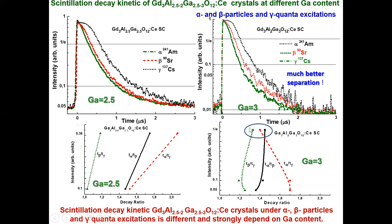However, looking at the separation values — T_alpha/T_gamma, T_alpha/T_beta, and T_beta/T_gamma — these ratios are something between 1.3 and 1.5, which is not a very large value. So probably, when we use such a substrate together with a film scintillator, the separation of decay profiles in the case of registration of such radiation types will be better.